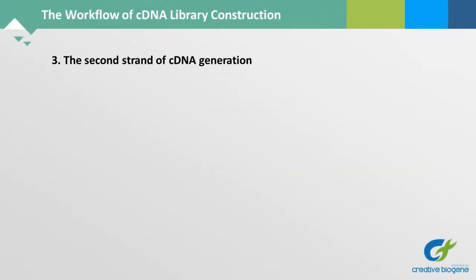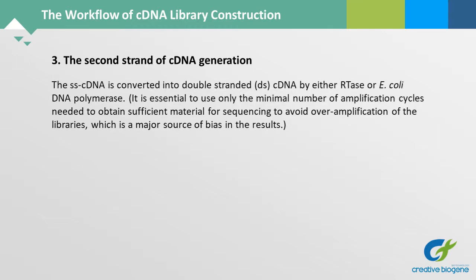Step 3: Second strand cDNA generation. The single-stranded cDNA is converted into double-stranded cDNA by either reverse transcriptase or E. coli DNA polymerase. It is essential to use only the minimal number of amplification cycles needed to obtain sufficient material for sequencing, to avoid over-amplification of the libraries, which is a major source of bias in the results.